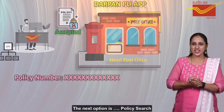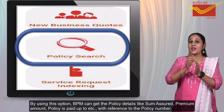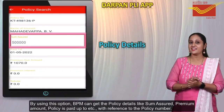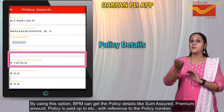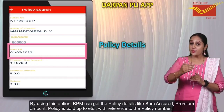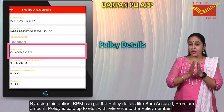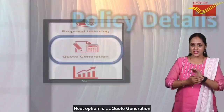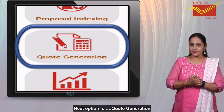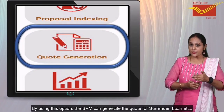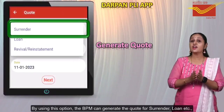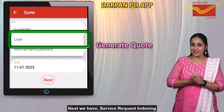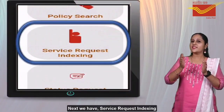The next option is Policy Search. By using this option, BPM can get the policy details like submission, premium amount, policy is paid up to, etc., with reference to the policy number. The next option is Code Generation. By using this option, BPM can generate the code for surrender, loan, etc.